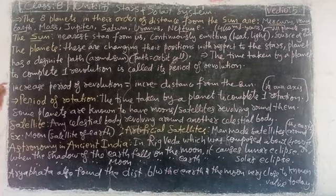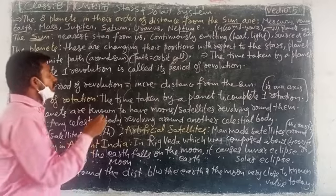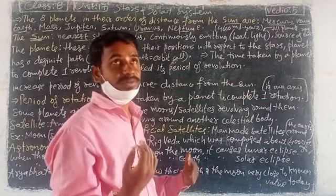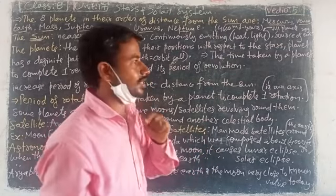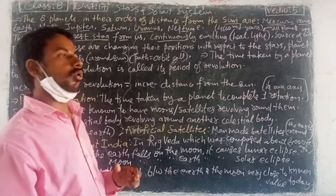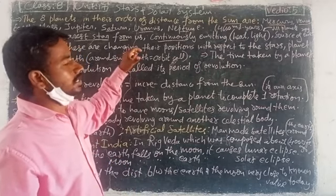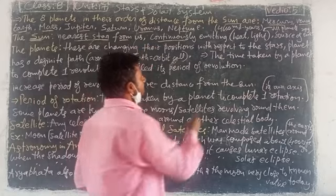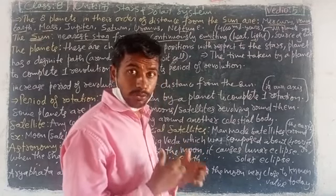First, let us study about the Sun. The Sun is the nearest star from us. Many stars are there, and among all of them the Sun is the nearest star. It is also a continuously emitting star — all stars emit, but the Sun is the nearest one that continuously emits heat and light.